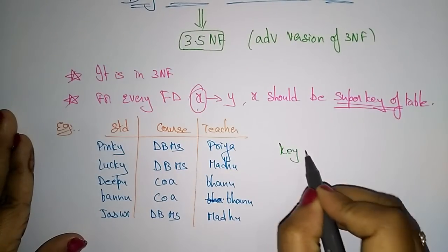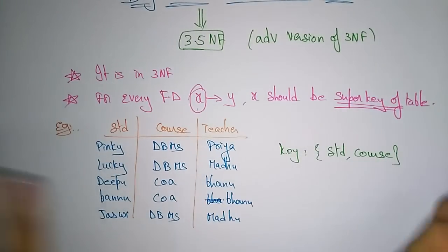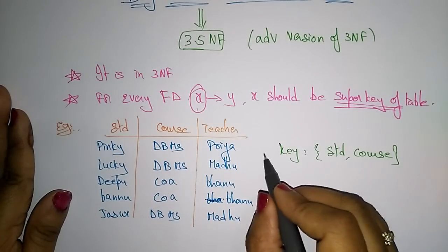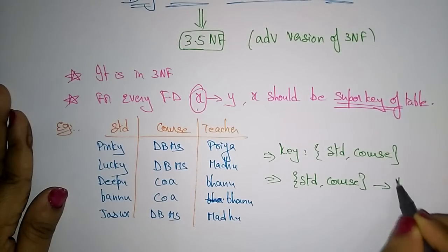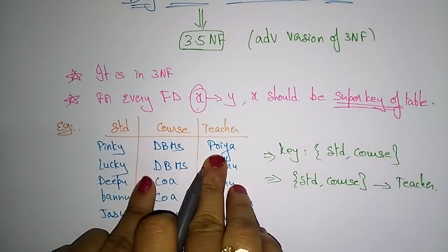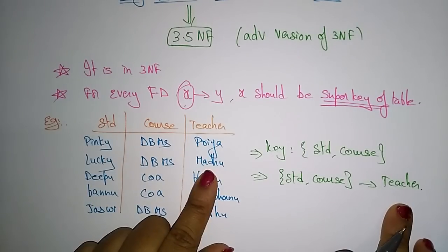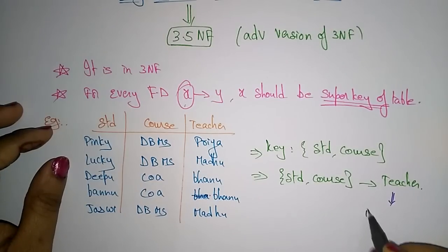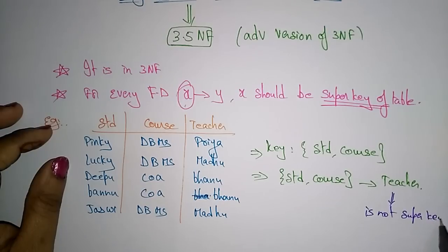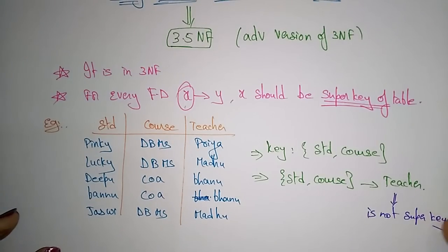The key attributes in this table are Student and Course — both together form the key. The functional dependency is: Student and Course together determine Teacher, because Teacher is a non-key attribute that is fully functionally dependent on the key attributes. The problem here is that Teacher is not a super key, but Teacher determines Course. So this violates BCNF.